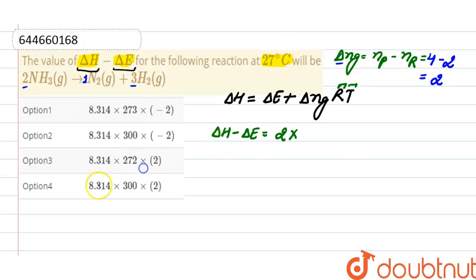...that represents this difference is option 4: 8.314 times 300 times 2.